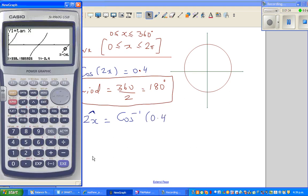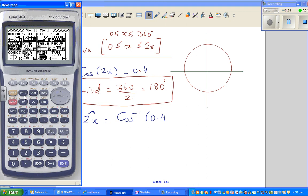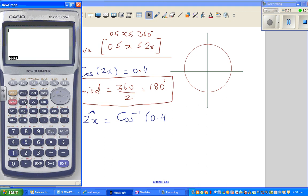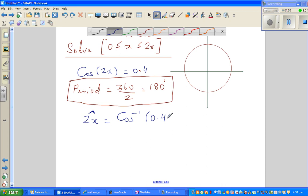So this is my calculator. First, go to run, and always check your setting. It's in degrees, so that's fine. So I'll go shift cos of 0.4. That is 66. I'm only writing a whole number, so this is 66 degrees. 66 degrees is the reference angle.